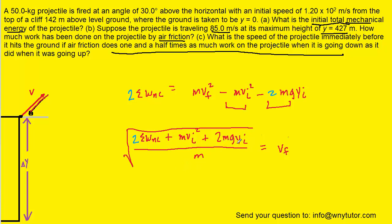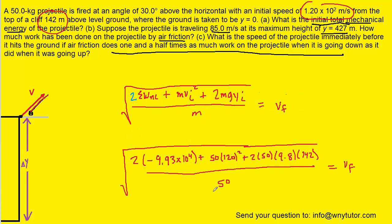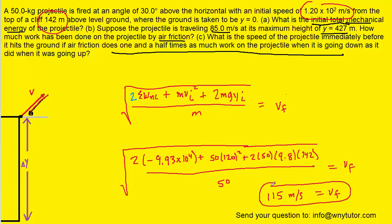We know the mass, g, the initial height of 142 meters, the initial speed of 120 meters per second, and the total non-conservative work calculated in part B. Plugging all the known values carefully into the calculator, you should get approximately 115 meters per second for the final speed of the projectile. This is the correct answer to part C.